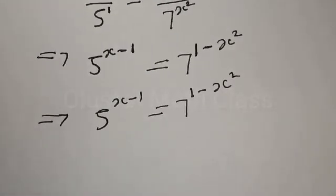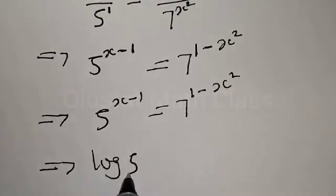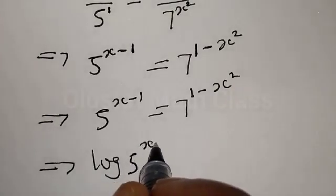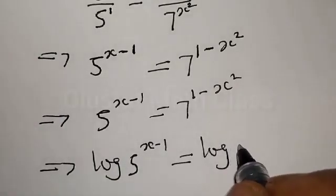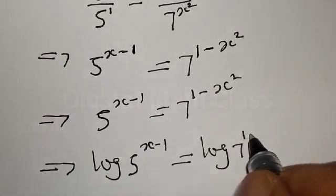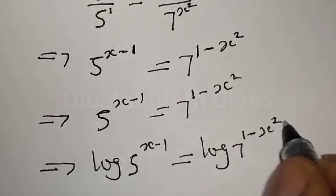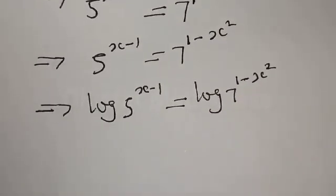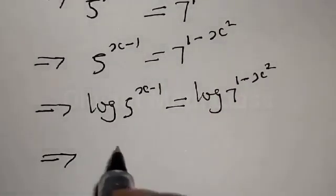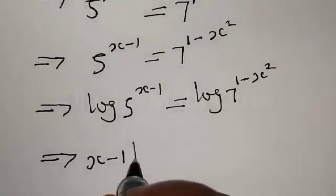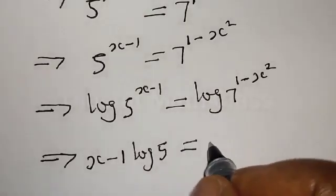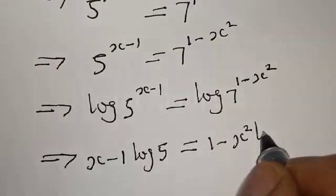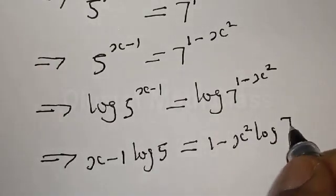Let's take the log of both sides. This implies that we have log of 5 raised to power x minus 1 equal to log of 7 raised to power 1 minus x squared. Applying the power rule, this gives x minus 1 times log 5 equal to 1 minus x squared times log 7.